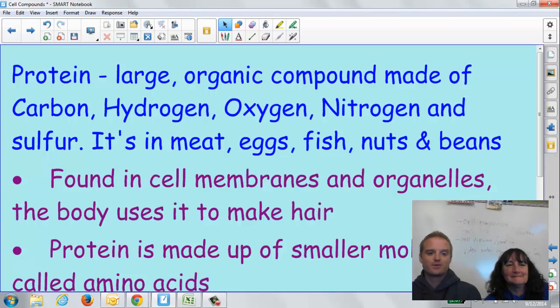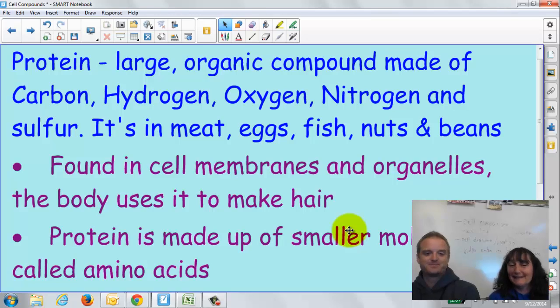So next, guys, we have proteins. This is my personal favorite, are proteins. Large organic compounds made of carbon, hydrogen, oxygen, nitrogen, and sulfur. And we find it in meat, eggs, fish, nuts, beans. And my personal favorite, bacon. And a lot of people, you know, you need that bacon. Because the proteins are found in your cell membranes and your organelles. And your body uses it to make hair. So you gotta get those proteins.